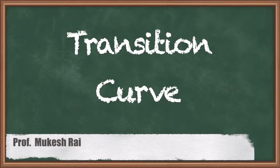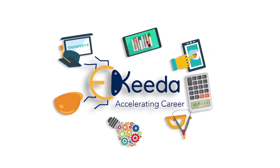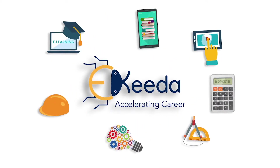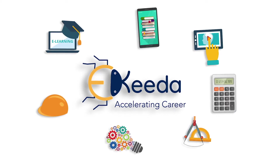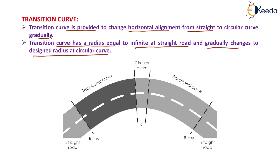Hello students, today we are going to study Transition Curves. A transition curve is provided to change horizontal alignment from straight to circular curve gradually. It has a radius equal to infinite at the straight road and gradually changes to the design radius at the circular curve.